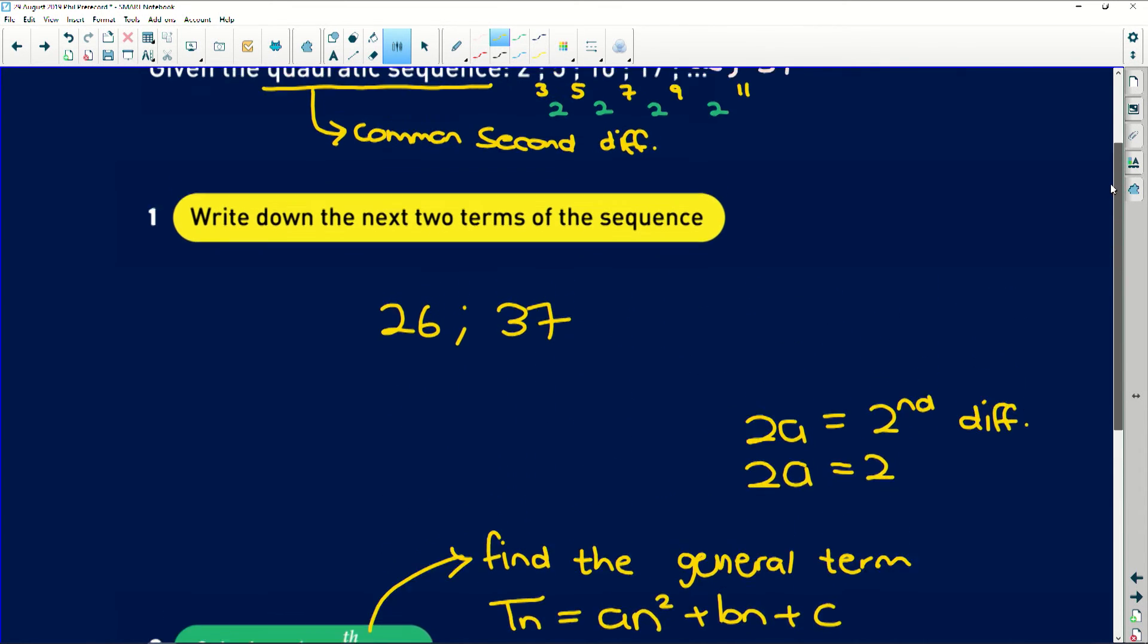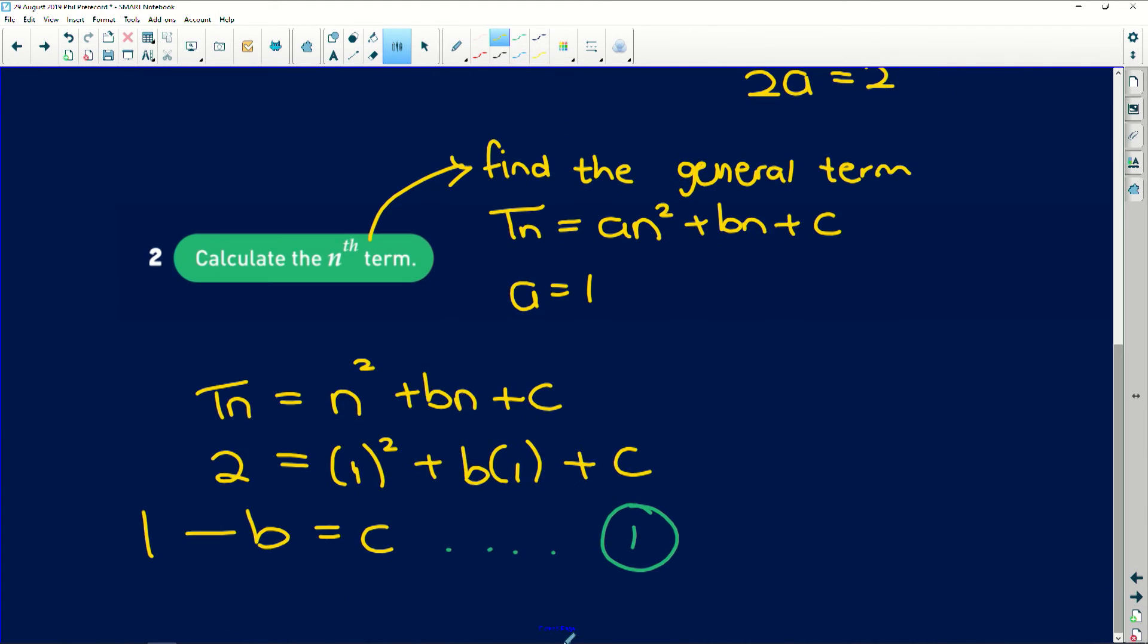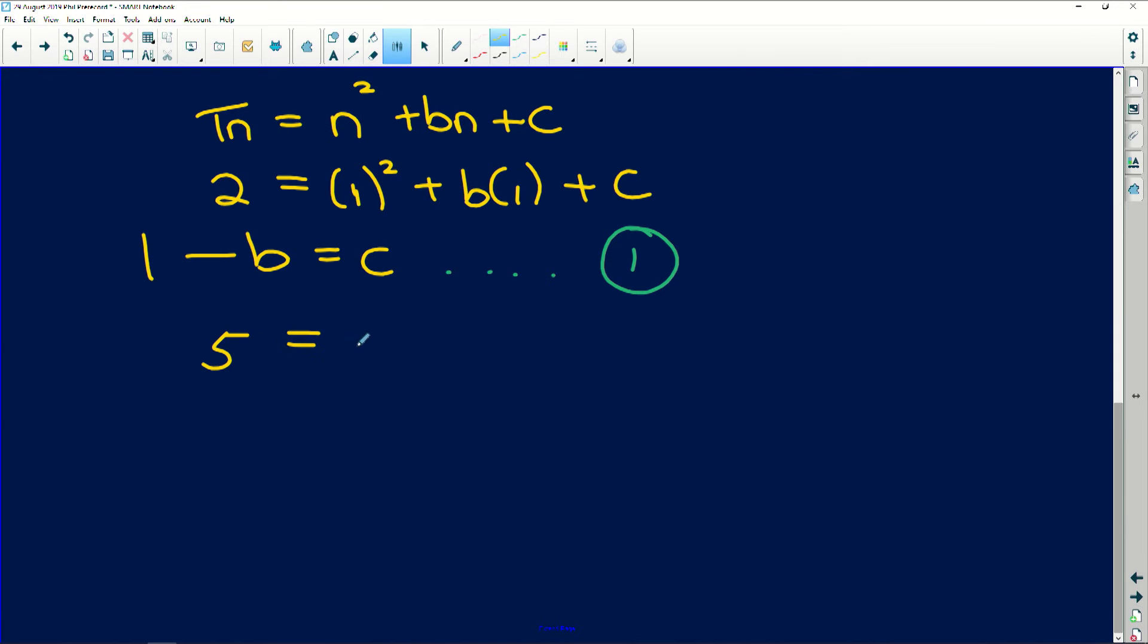Now, if we look at term 2, it's given to us as 5. So that's basically the y value if x is 2. So 5 is equal to, and we substitute 2 where n is. So 2² + b(2) + c. And again, I'm going to try and get it in terms of c so we can make our lives easier. So 2² is 4, subtracted from 5 we're going to get 1 and then 2 multiplied by b is 2b. Take it to the other side it becomes negative and we're going to get c. And that is our second equation.